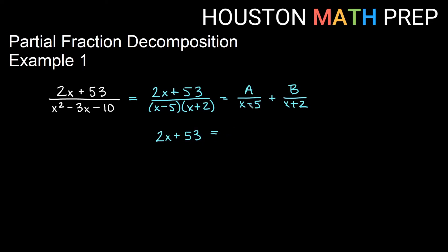In the A fraction, I would multiply in the missing x plus 2 factor in the top and bottom, so the numerator in the end would look like A times x plus 2. In my B fraction, I'm missing the x minus 5 factor underneath, so I would multiply that in the top and the bottom. And in the end, my numerator would look like B times x minus 5.